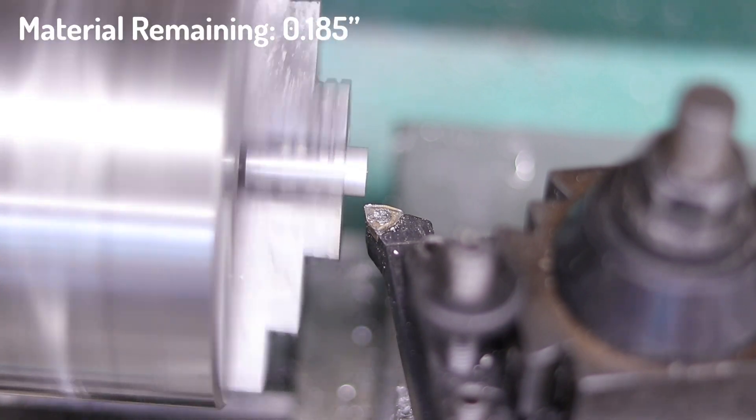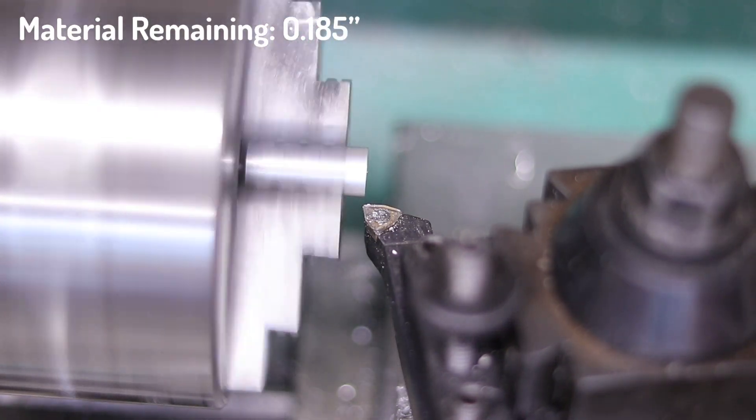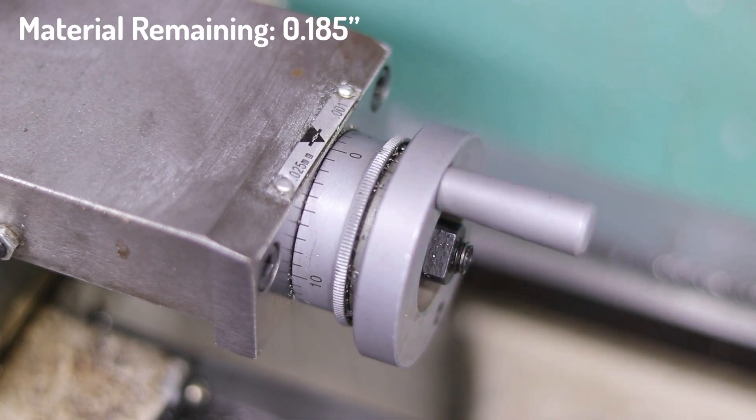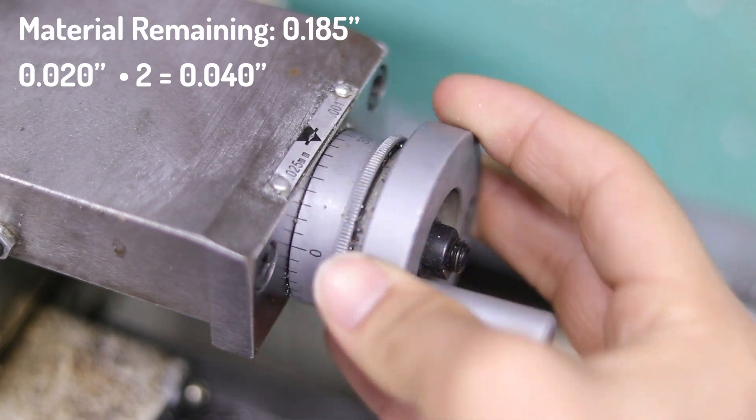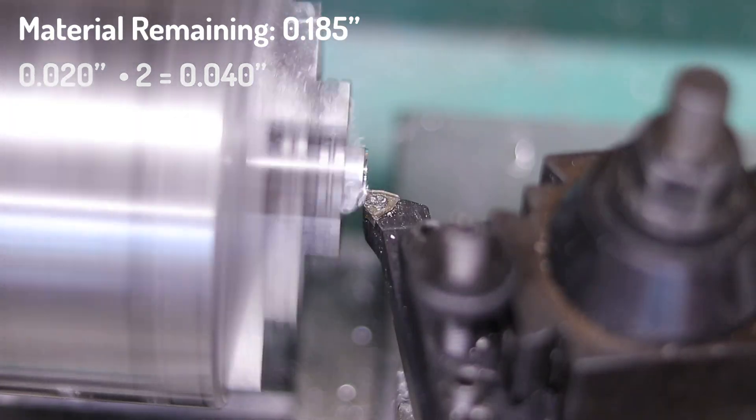Remember, our goal is to remove 185 thousandths of material from the part. The upper dial will indicate how much material we've removed. One rotation is 60 thousandths of an inch, so I find it easy to mentally count in increments of 20 thousandths. I go inwards 20 thousandths twice, and then cut. I repeat this until I have roughly 60 thousandths remaining.